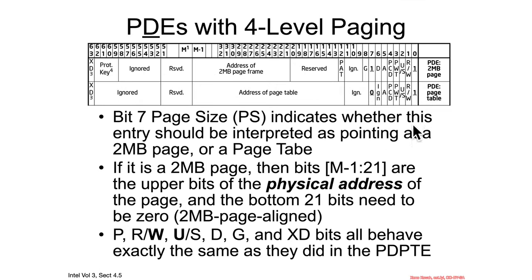Once again, there's three, but I leave off one. Present equals zero means it's going to cause errors when you try to access it. PS equal one or zero — once again, gives us two different interpretations.